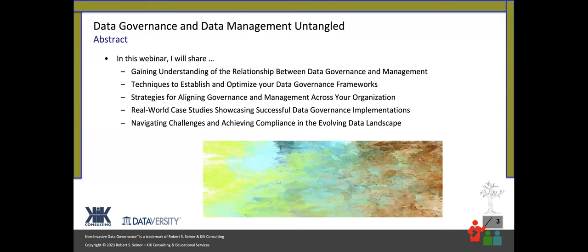So what are we here to talk about today? We want to look at these two disciplines of data governance and data management. We want to gain an understanding of what the relationship between them is. I'll start with some basic definitions and then map together some of the activities between the two disciplines. We'll talk about techniques to establish and optimize your data governance framework, ways to align data governance and data management across your organization, several real-world case studies, and then wrap up with navigating challenges and achieving compliance, because the data landscape is constantly changing.